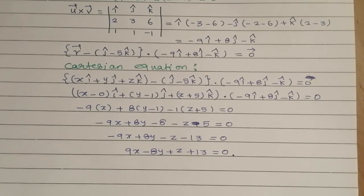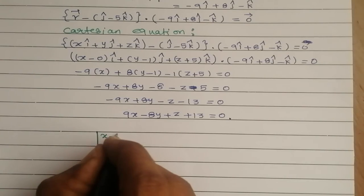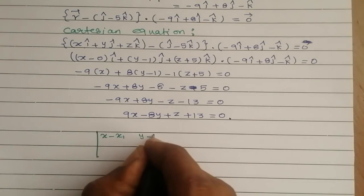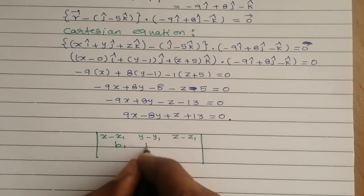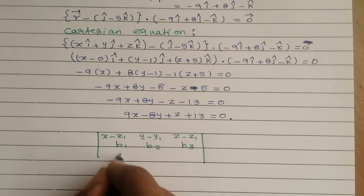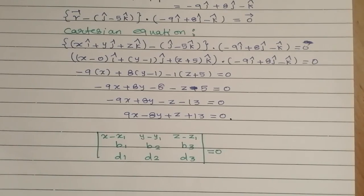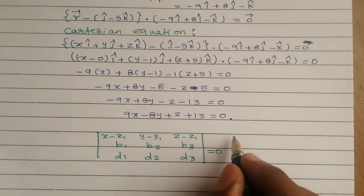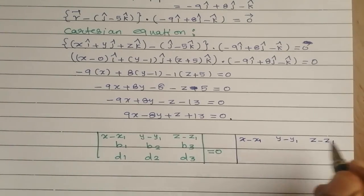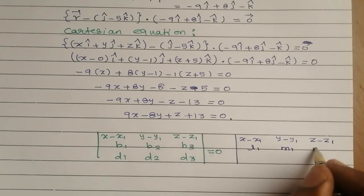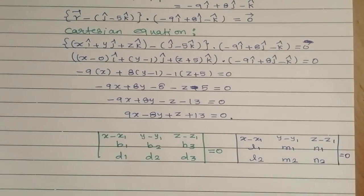Alternatively, we can find the Cartesian equation directly using the determinant formula: the determinant of (x minus x1, y minus y1, z minus z1), (l1, m1, n1), (l2, m2, n2) equal to 0, where (l1, m1, n1) and (l2, m2, n2) are the direction ratios of the two parallel lines. Expanding this determinant gives the same result.